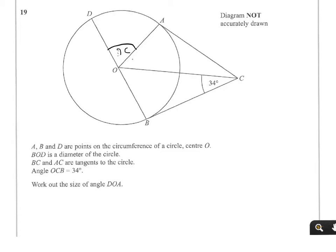With the information we've already got, because of the tangents to the circle property, we have 90-degree angles. This is in fact a congruent triangle because we have equal sides here, here and here. So the angle here will be 34 degrees as well.